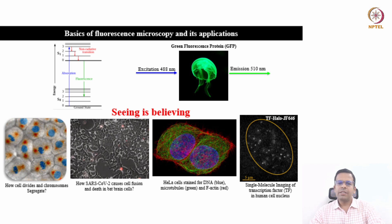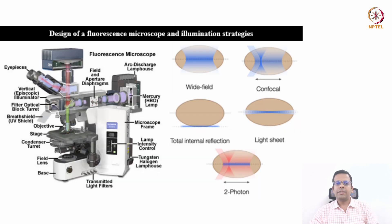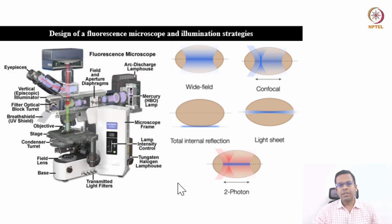During this course, you will learn basics of fluorescence microscopy and its applications in life science research. You will also learn how to design a fluorescence microscope and a variety of illumination strategies such as wide field imaging, confocal imaging, TIRF or high-low imaging, light sheet imaging, and 2-photon or multi-photon imaging.